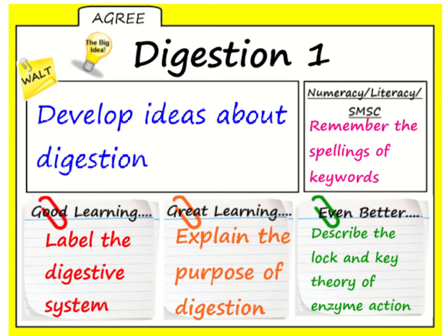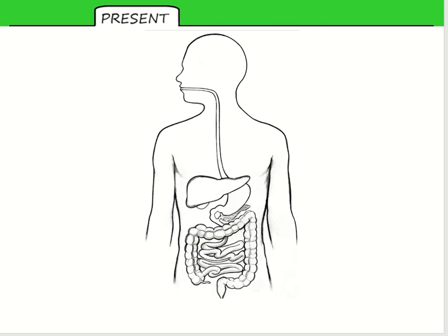We're going to do the first of two lessons on digestion where you can develop ideas about digestion. You'll be able to label the digestive system correctly, explain the purpose of digestion, and describe the lock and key theory of enzyme action. The first thing we're going to do is label the digestive system.